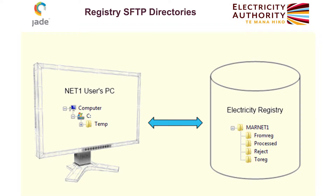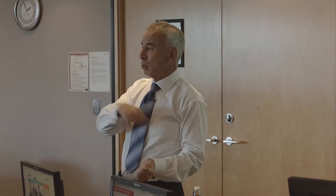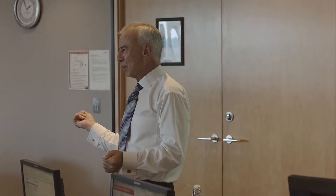Basically, the way this works is that instead of logging on through the browser and typing information in a painstaking manner, you can create a file that's got all of the relevant information in it, and you can transfer that file to the registry and get the registry to process that file.